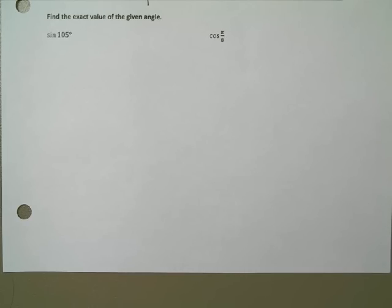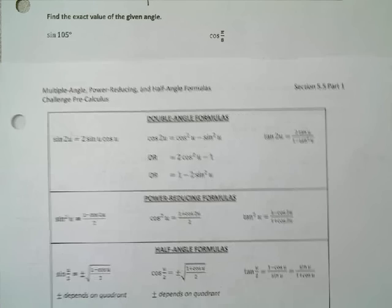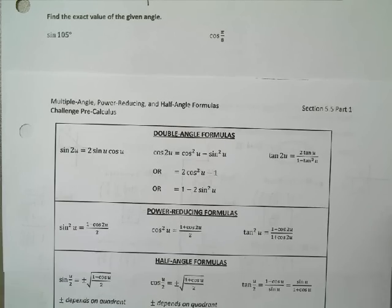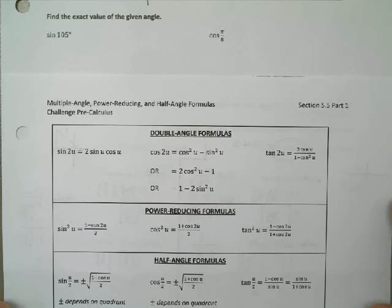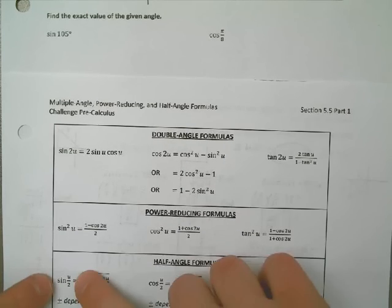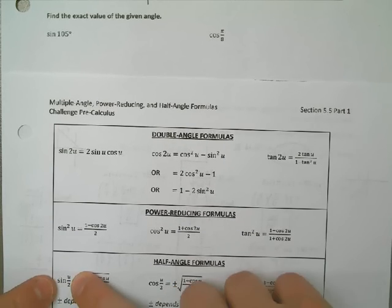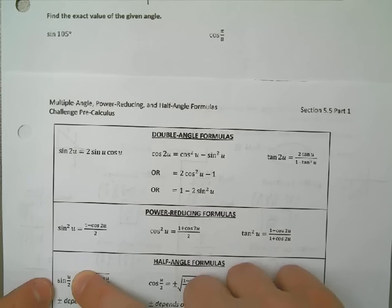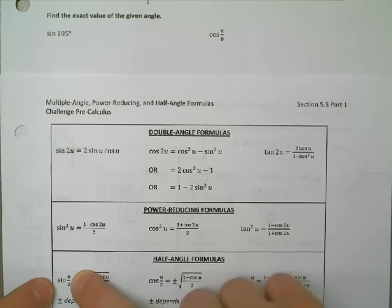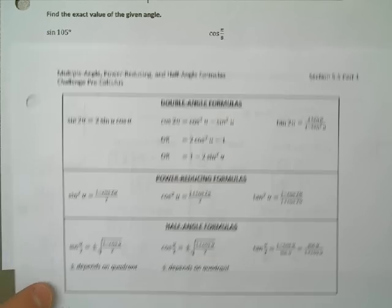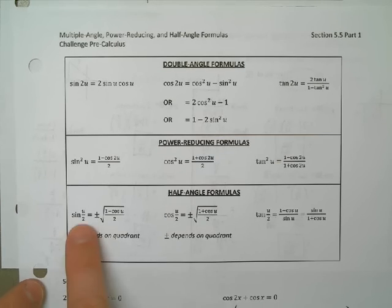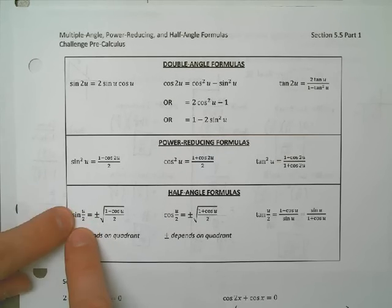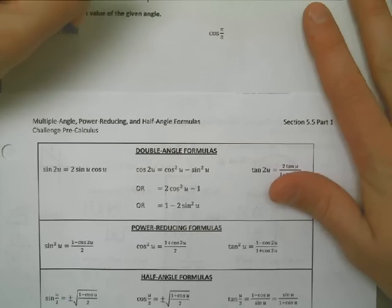What I know is that I have a half-angle formula and 105 degrees is half of 210 degrees. So I'm going to rewrite it using this, saying U is 210, because it's the sine of 210 divided by 2. My first step is to recognize that it's half of an angle that I can work with.